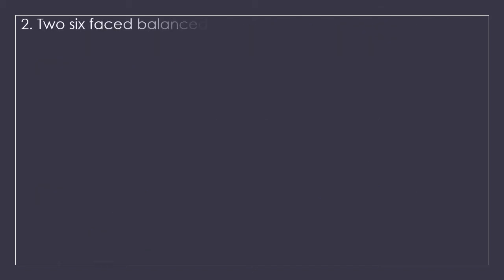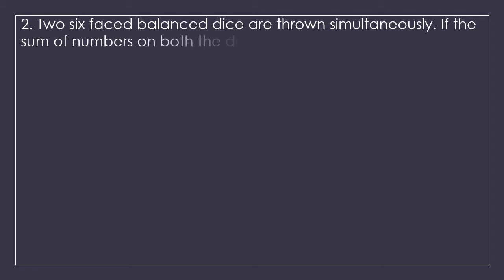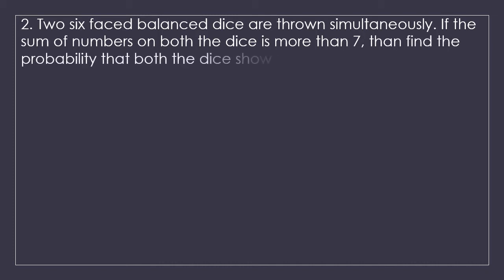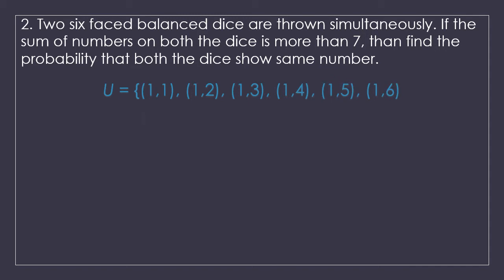Question number 2. Two 6-faced balanced dice are thrown simultaneously. If the sum of numbers on both the dice is more than 7 — since the word 'if' is used, this is the given event — find the probability that both the dice show the same number. So our two events are: event A is sum more than 7, and event B is both dice showing the same number. I will prepare a table of dice outcomes so you can understand it.